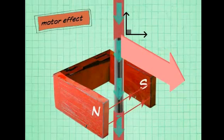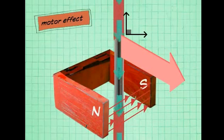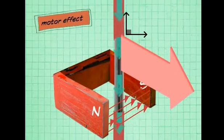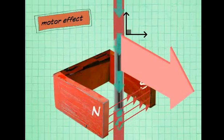This is known as the motor effect. The size of the force can be increased by increasing the strength of the magnetic field and by increasing the size of the current. The force is strongest when the wire is at right angles to the magnetic field lines of the magnet.